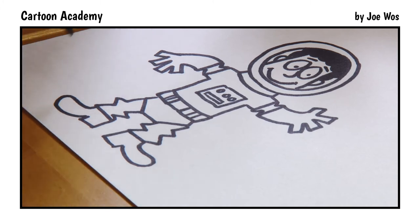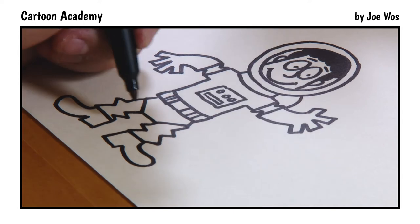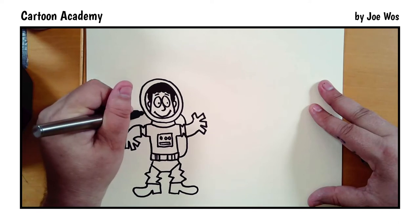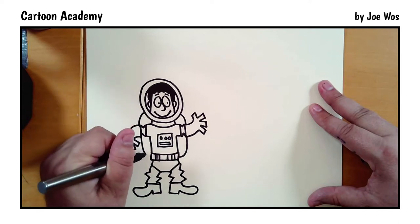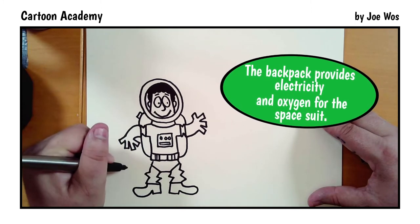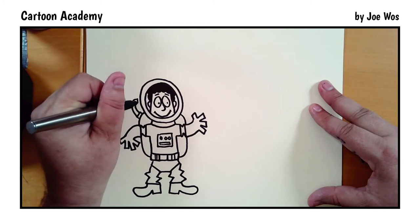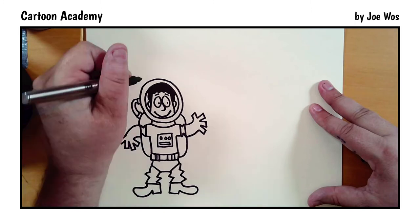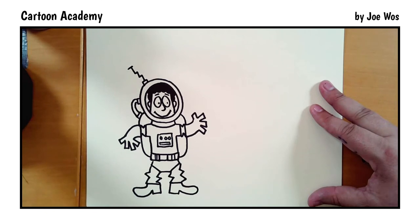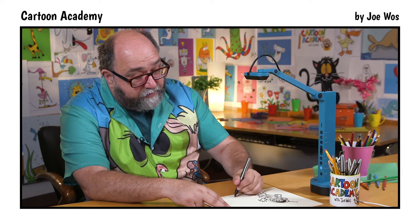Then we're just going to add some minor details. We have a backpack. So from the helmet to the glove and from the glove to the side. We have an air tube going from that backpack to the helmet. Curved lines and a small rectangle. We could add a little antenna here too. Wonderful. A little bit of the lunar surface here, just a scribbly little line.